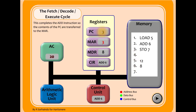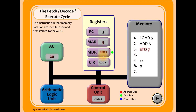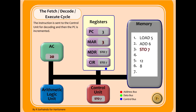We're ready to take the value three from the program counter, put it into the memory address register, and fetch the next instruction. The address bus and control bus signal a fetch, and the instruction returns along the data bus from memory address three, which is 'sto7'. That gets moved into the current instruction register and then down to the control unit to be decoded. Decoding reveals that 'sto7' means: store whatever value is currently in the accumulator into address seven. The program counter has also been incremented to four.